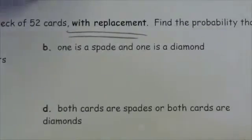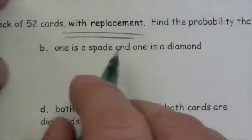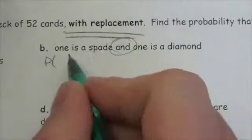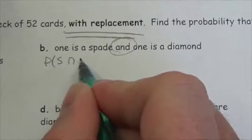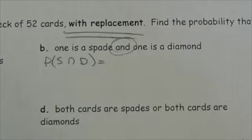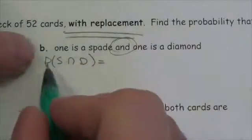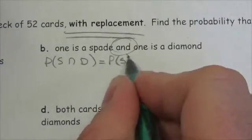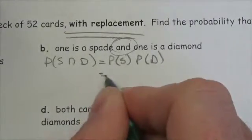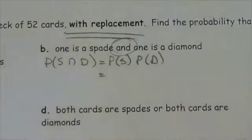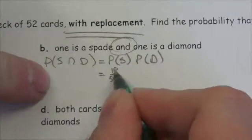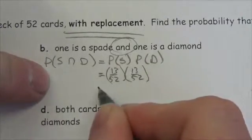Next problem: one card is a spade and one is a diamond. We're looking for the probability that we get a spade and a diamond — specifically, the first card is a spade and the second card is a diamond. These are independent events because we're putting the card back, so it's the probability of getting a spade multiplied by the probability of getting a diamond. That's 13 out of 52 for spades and 13 out of 52 for diamonds.